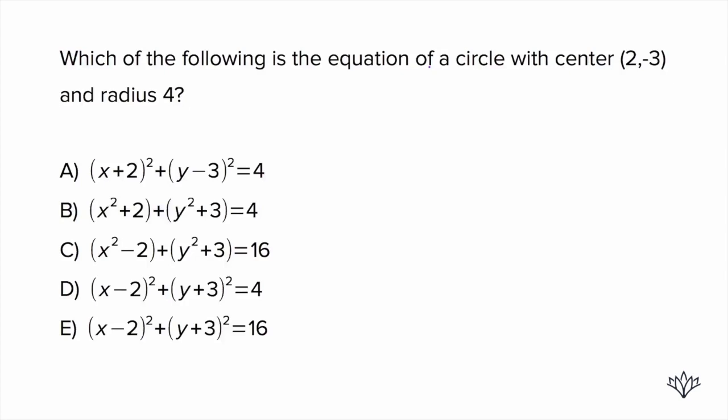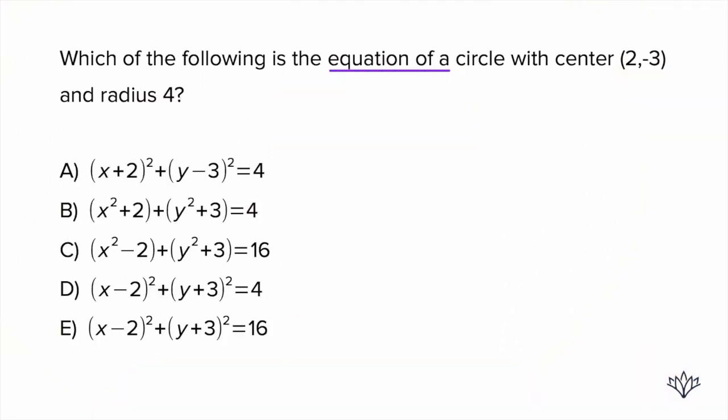It says: which of the following is the equation of a circle with center (2, -3) and radius 4? Here we need to know the equation of a circle. The equation of a circle is given as (x - h)² + (y - k)² = r².